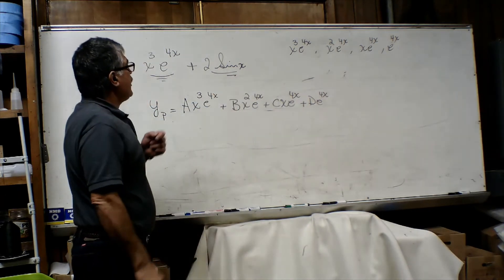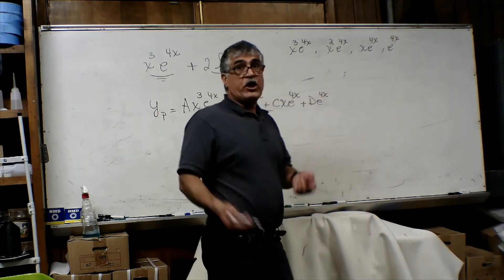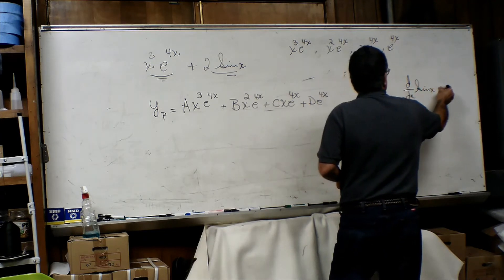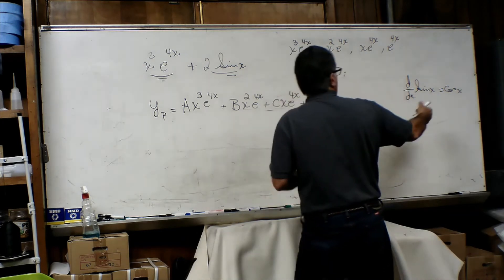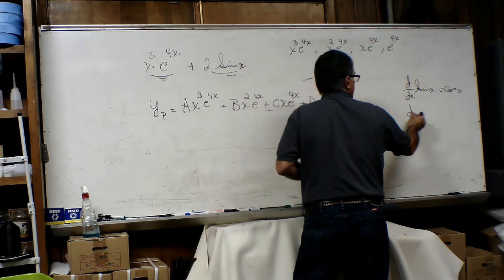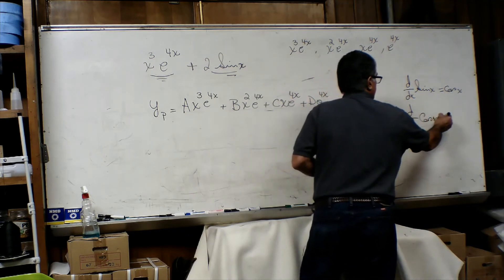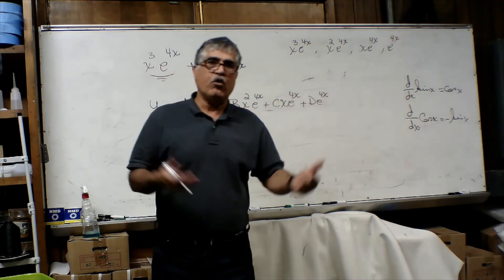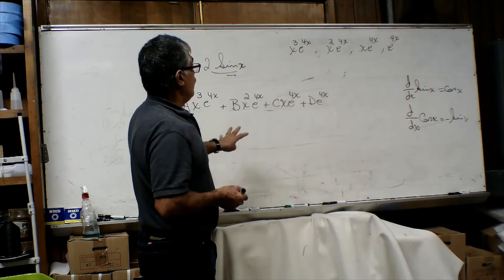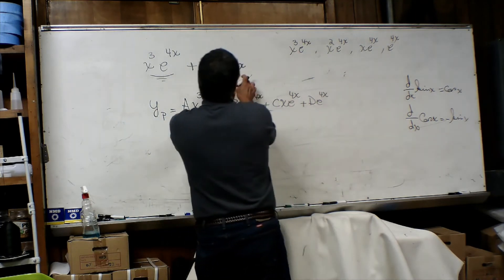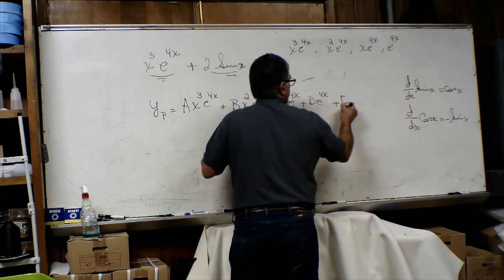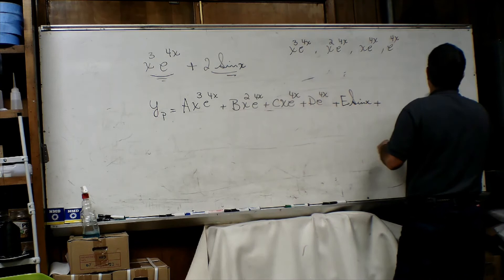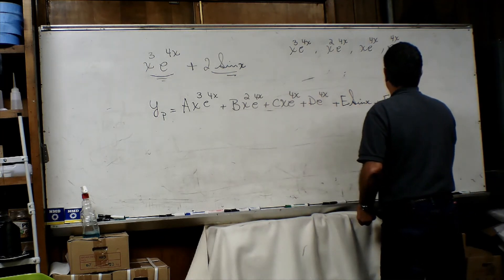For the second portion — sine of x — we know that if we differentiate sine of x, the derivative of sine of x is equal to cosine of x. And if we take a derivative again, the derivative of cosine of x is equal to minus sine of x. So anytime we take a derivative, we're going to have sine of x and cosine of x. What we have to assume for that portion will be E sine of x plus F cosine of x.